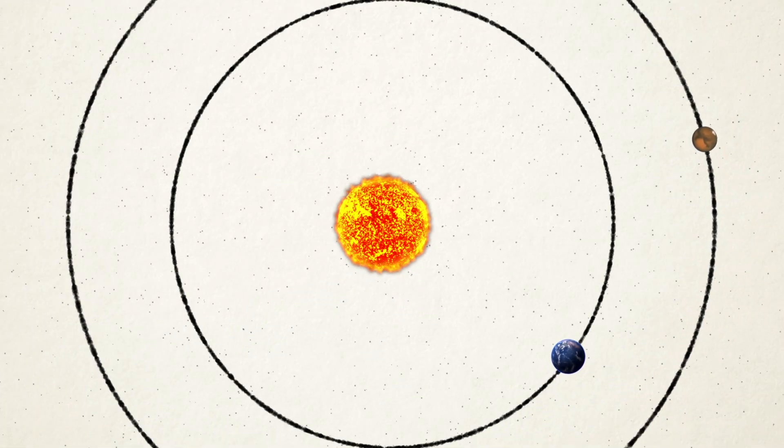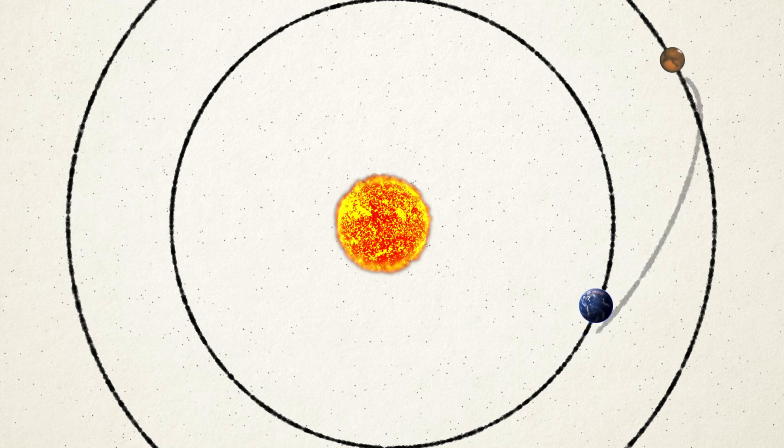It takes 55 times more energy to go to the Sun than it does to go to Mars. Why is it so hard to get to the Sun?